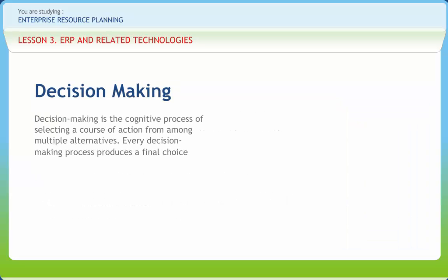Decision making is the cognitive process of selecting a course of action from among multiple alternatives. Every decision making process produces a final choice. Decision making is said to be a psychological construct — a construction that imputes commitment to action. That is, based on observable actions, we assume that people have made a commitment to effect the action.